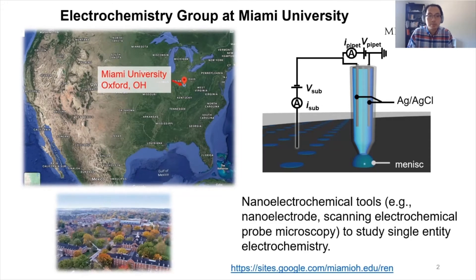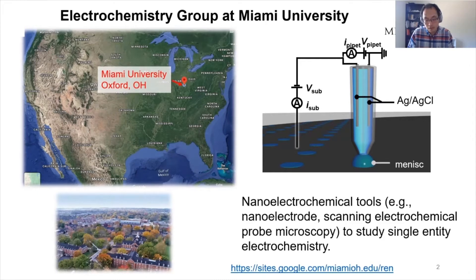We are the electrochemistry group at Miami University, which is actually located in Oxford, Ohio — not in Florida. It's in the Midwest, and currently it's fall here. You can see all the trees; it's a very beautiful campus. What we specialize in is using nano-electrochemical tools, including scanning electrochemical cell microscopy, to study single entity electrochemistry and processes at the electrode surface.